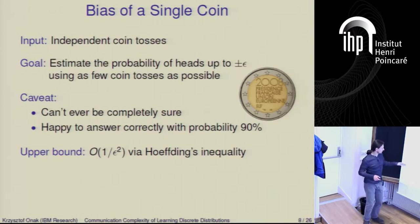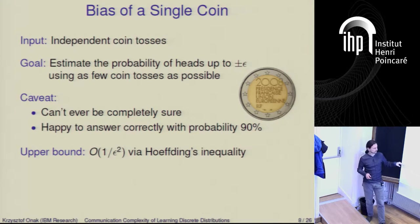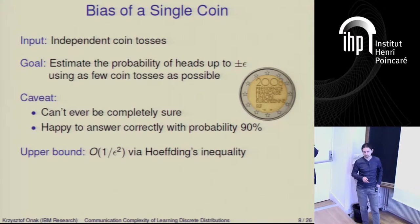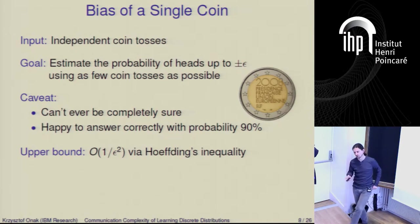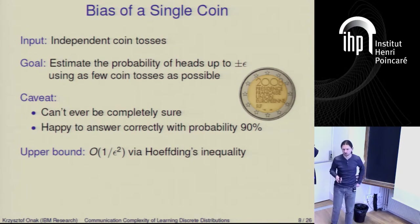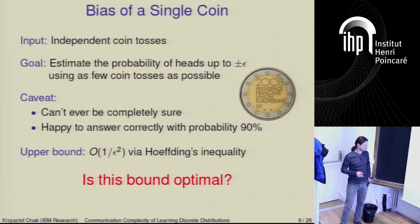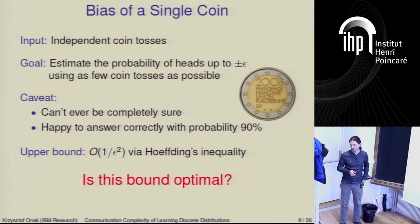For the upper bound, it is well known that using Hoeffding's inequality, one over epsilon squared samples are going to be enough. A natural question is: is this bound optimal? There are various ways you could attack this problem. The first historic proof that answers this question uses some combinatorial argument, but the problem with the combinatorial argument is that it gets pretty complicated when you have two binomial distributions and start looking at how much the difference between those distributions is — what is the L1 distance between those two distributions, since this bounds the probability with which you can distinguish them.